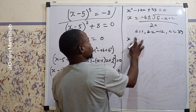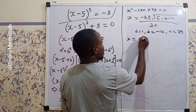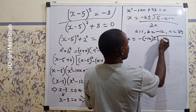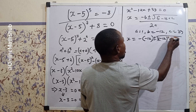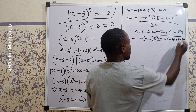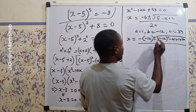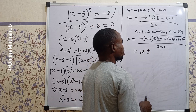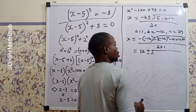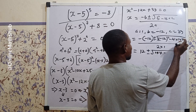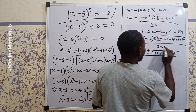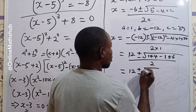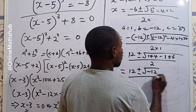Substituting in: x equals negative (minus 12), plus or minus the square root of (minus 12) squared minus 4 times 1 times 39, all divided by 2 times 1. This gives 12 plus or minus the square root of 144 minus 156, divided by 2. That simplifies to 12 plus or minus the square root of minus 12, divided by 2.